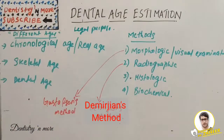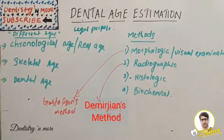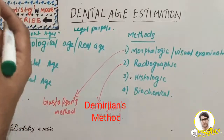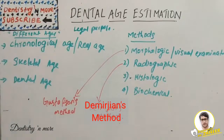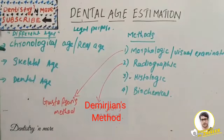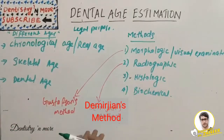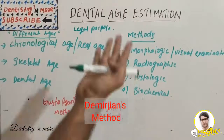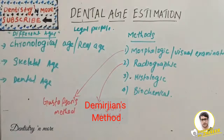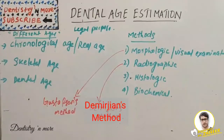Hello everyone, welcome back to another session in dentistry. Today we have a very important topic in oral pathology which comes under forensic dentistry - dental age estimation. From an exam point of view, you would have one question from this topic in every question paper. Sometimes it will be Gustafson's method, Demirjian's method, histologic method, or simply dental age estimation, so you just cannot skip this chapter.